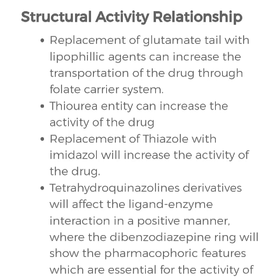Regarding the structural activity relationship of Methotrexate: replacement of the glutamate tail with a lipophilic agent can increase transportation of the drug through the folate carrier system. The thiourea entity can increase the activity of the drug. Replacement of thiazole with imidazole will increase the activity of the drug. The tetrahydroquinazoline derivative will affect ligand-enzyme interactions positively, where the diazepine ring shows pharmacophoric features essential for the activity of the drug.